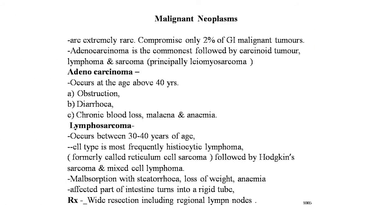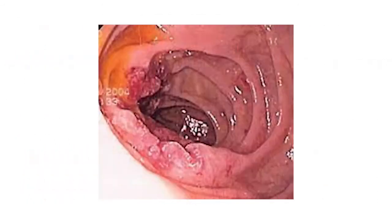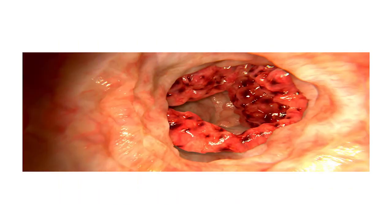Malignant neoplasms of the small intestine are extremely rare, comprising only 2% of gastrointestinal malignant tumors. Adenocarcinoma is the commonest, followed by carcinoid tumor, lymphoma, and sarcoma — principally leiomyosarcoma. Adenocarcinoma occurs at age 40 years and presents with obstruction, diarrhea, and chronic blood loss (melena and anemia). Lymphosarcoma occurs more commonly between 30–40 years of age; the cell type is most frequently histiocytic lymphoma, formerly called reticulum cell sarcoma, followed by Hodgkin's sarcoma and mixed cell lymphoma. Main symptoms include malabsorption with steatorrhea, weight loss, and anemia. Treatment is wide resection including regional lymph node resection.